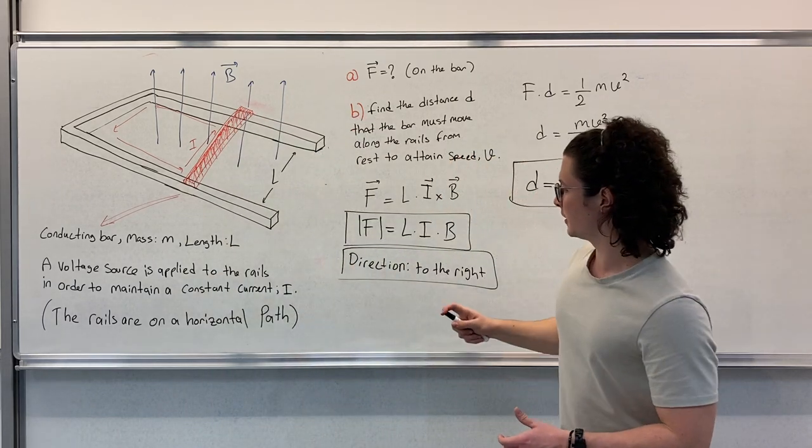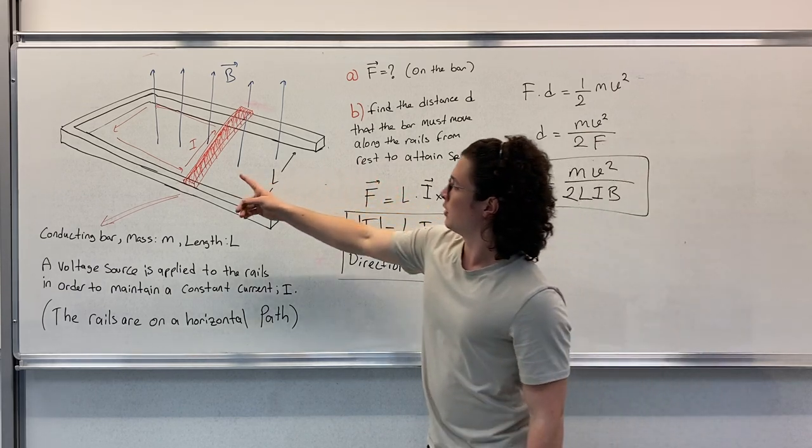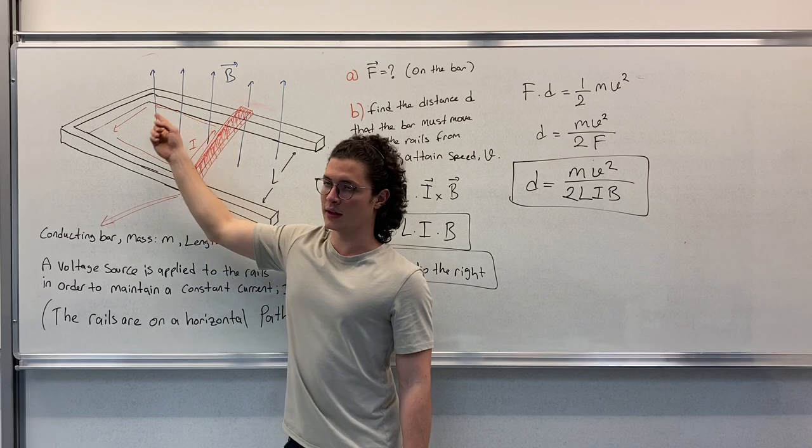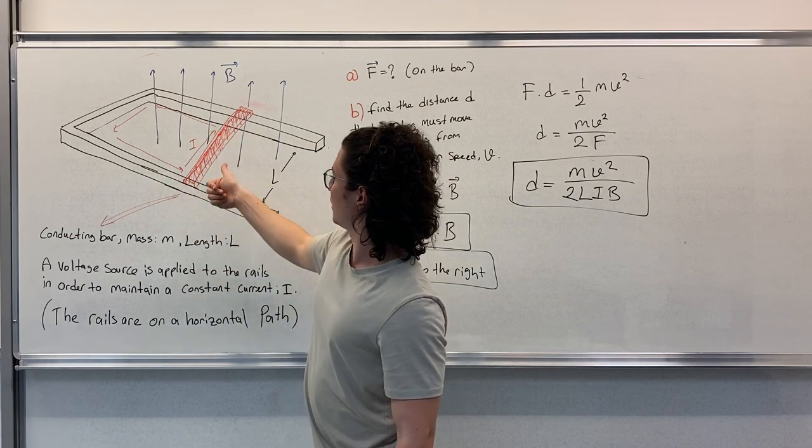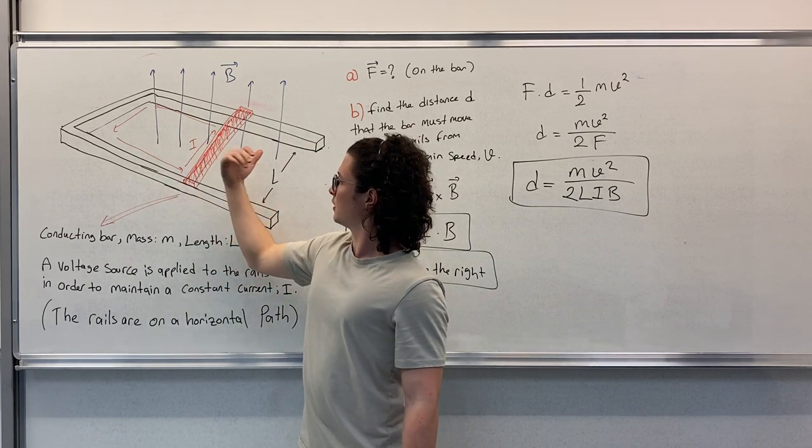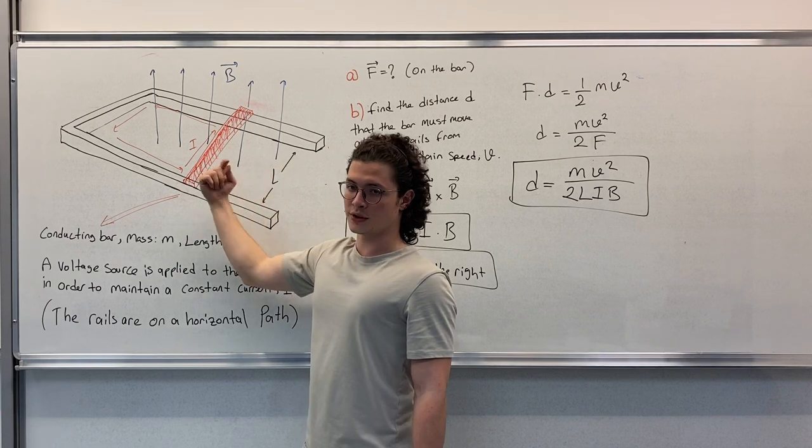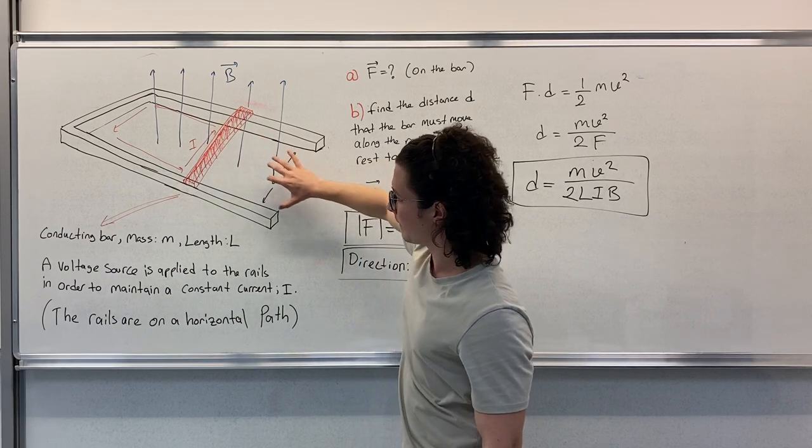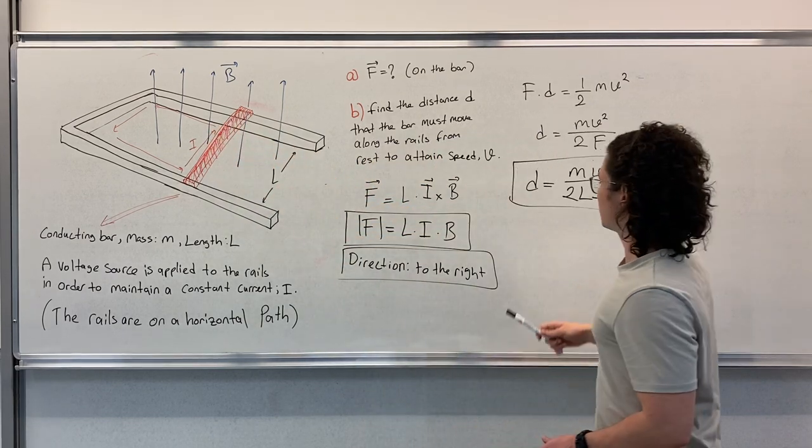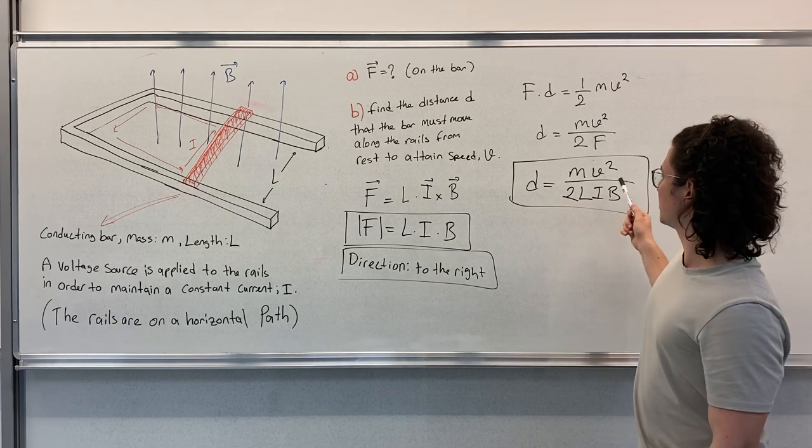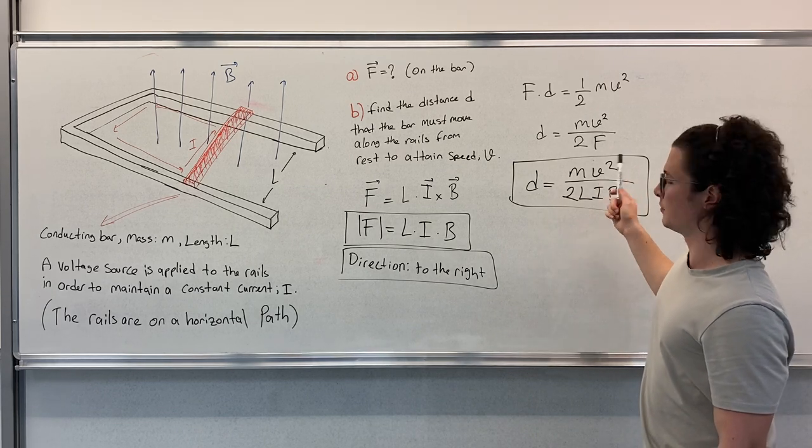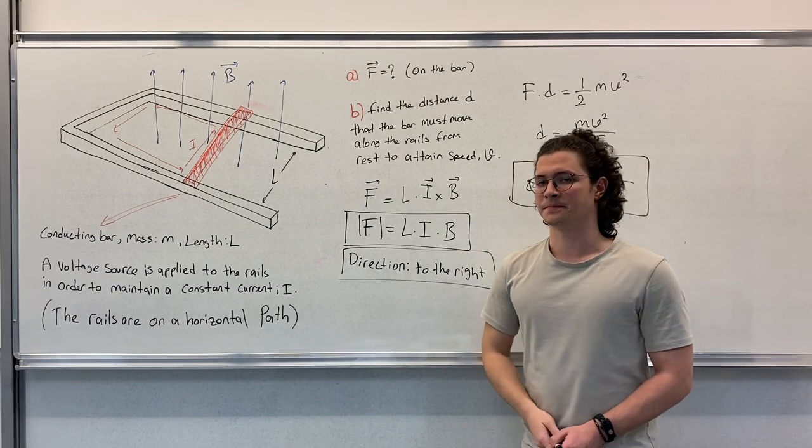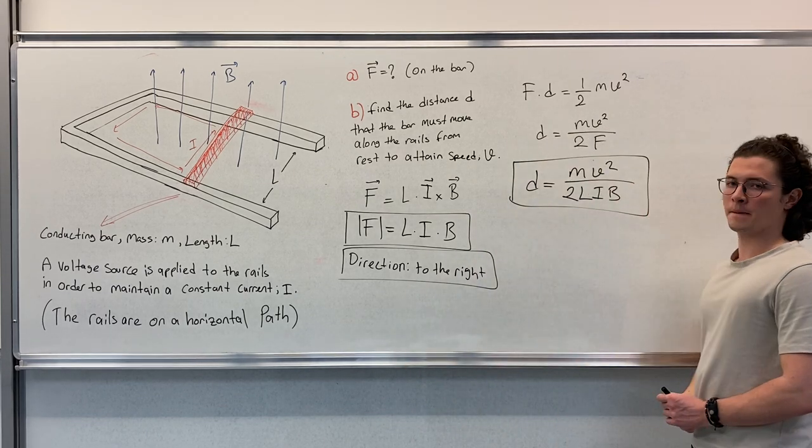So as a summary, here we have a constant current traveling like this. This current and this magnetic field cause a force in this direction. The bar starts to accelerate, and as it travels distance D, it reaches velocity V. That's all for this question. Thank you for listening.